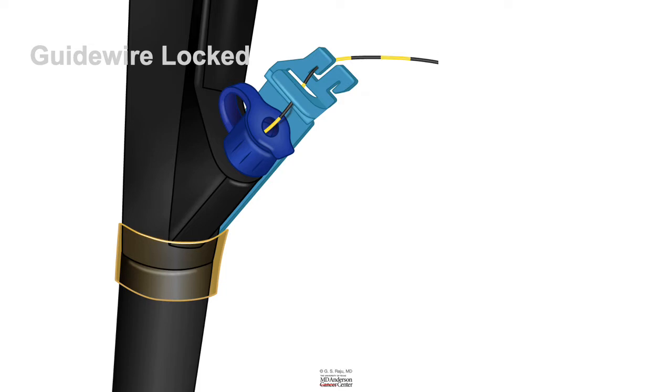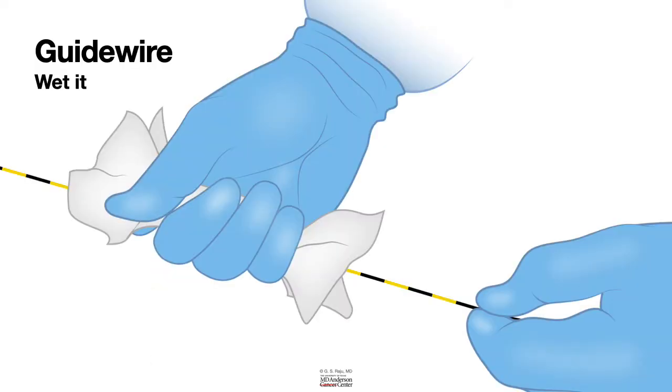The locking device is in place and the guide wire is in a locked position. What you do is you wet the guide wire using saline soaked gauze - that is very important.